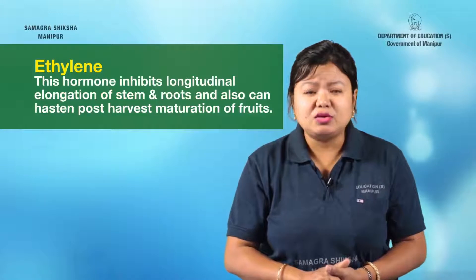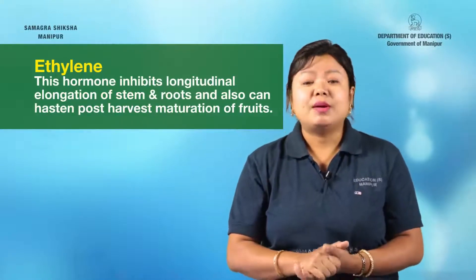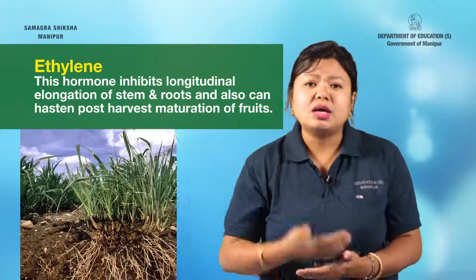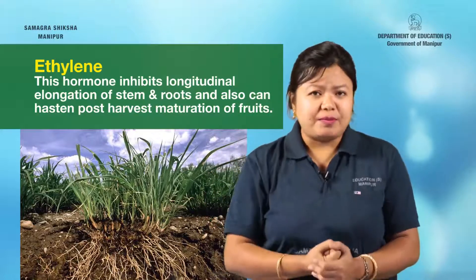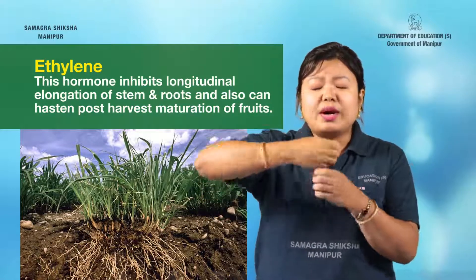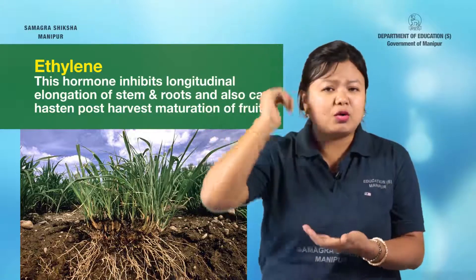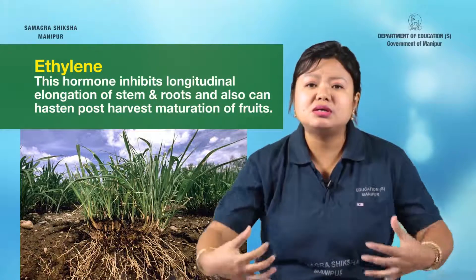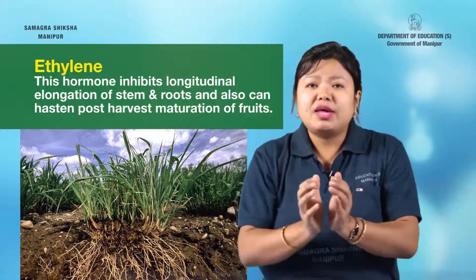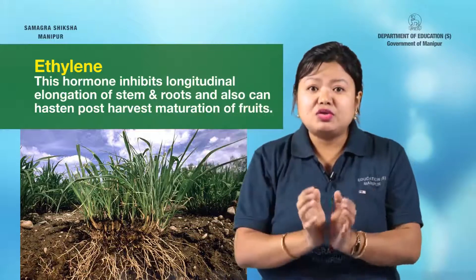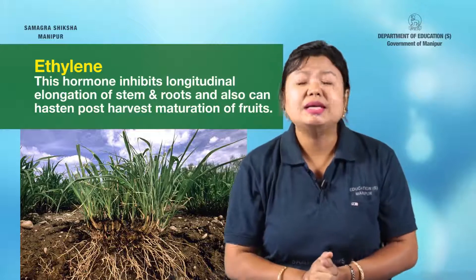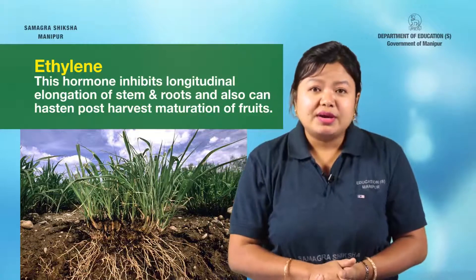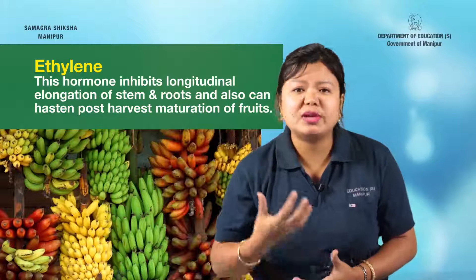The next growth inhibitor hormone is ethylene. Ethylene inhibits the longitudinal elongation of the stem. It can also hasten post-harvest maturation of fruits.